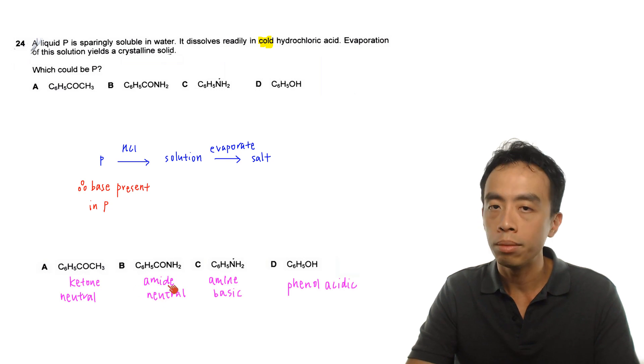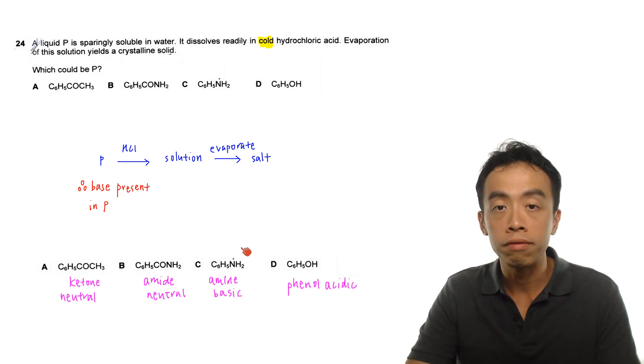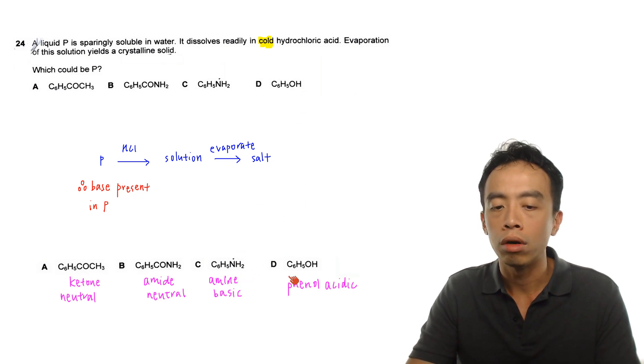B, this is an amide. Amides are neutral. Then for C, this is phenylamine. Phenylamine is alkaline. Then for option D, phenol. Now phenol is acidic.